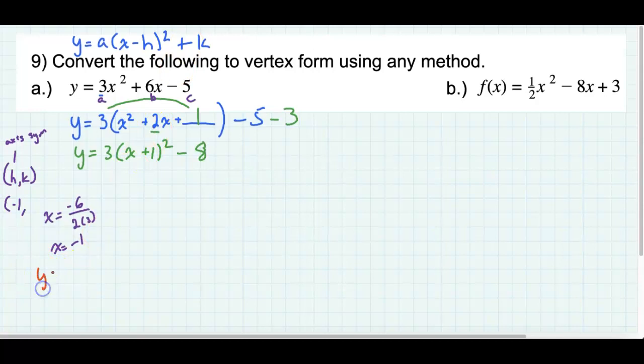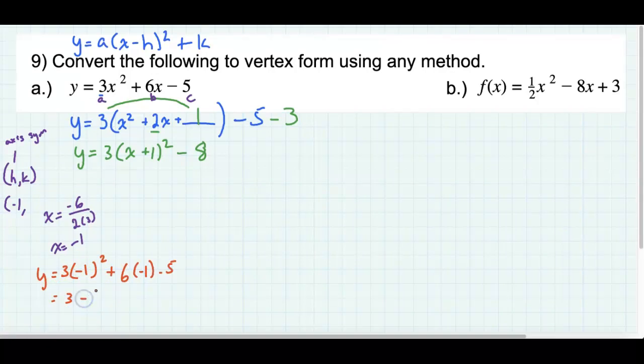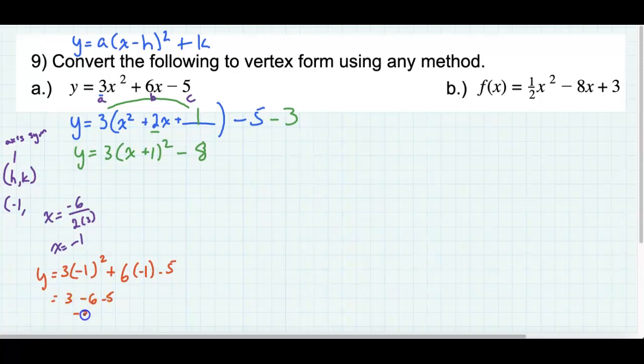So y is equal to 3 times negative 1 squared. By the way, I'm using the original formula. I'm not going to use this one, okay? Just in case it's wrong or something. Plus 6 times negative 1 minus 5. So this is equal to 3 times 1, right? So that's 3 minus, minus 6, minus 5. So 3 minus 6 is negative 3. Minus 5 is negative 8. So negative 8 per k.